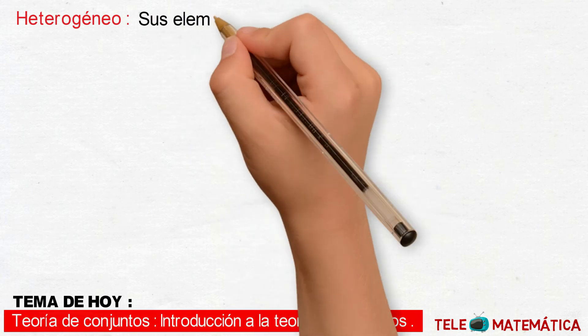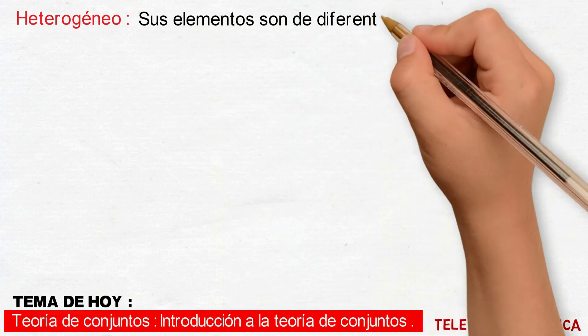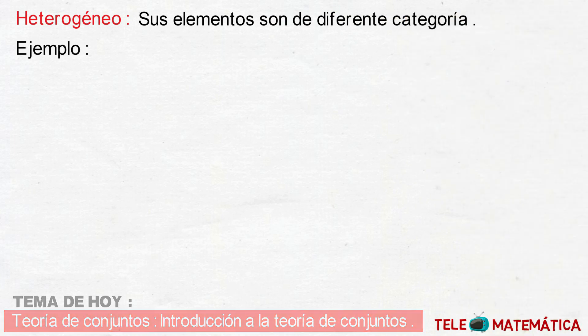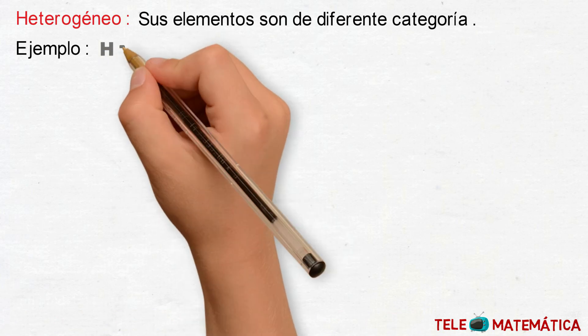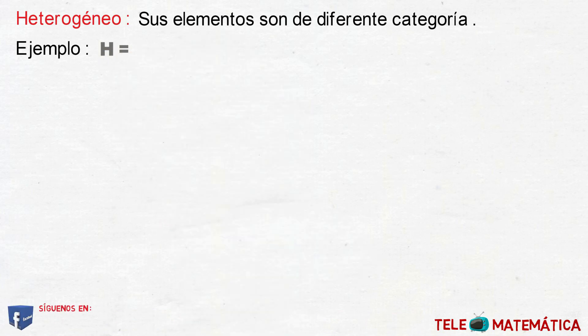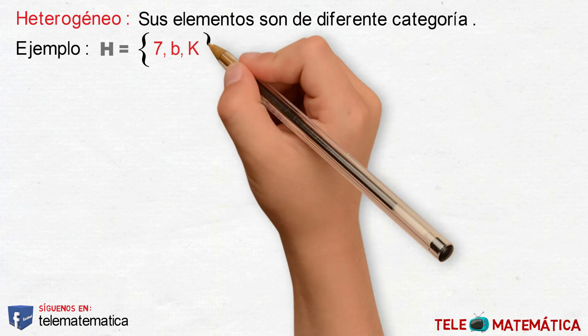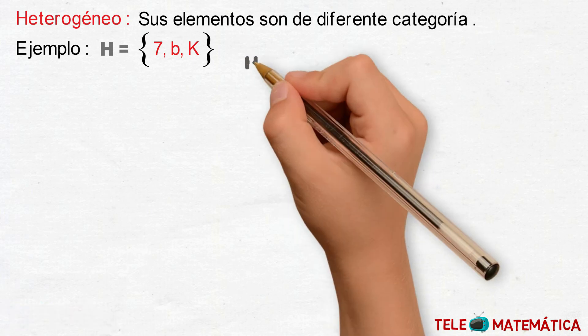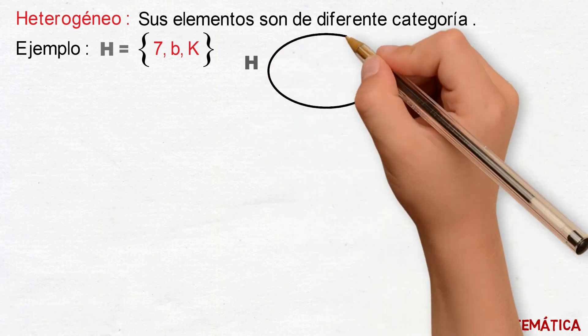Siguiente clasificación, conjunto heterogéneo, que se define como: sus elementos son de diferente categoría. Por ejemplo, el conjunto H, definido por el número 7, la letra B y la letra K. Y gráficamente nos quedaría que el conjunto H tiene por elementos esos distintos tipos.